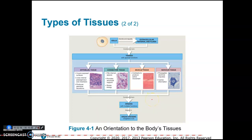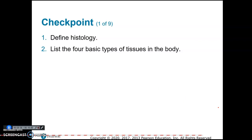Connective tissue fills internal spaces, provides structural support as in the case of bone, and stores energy. Adipose tissue also stores energy. Connective tissue is going to be the one with the most diversity. Muscle tissue is specialized for contraction, and nervous tissue is specialized for conducting electrical impulses.